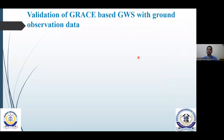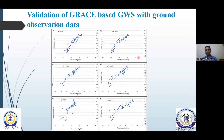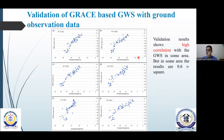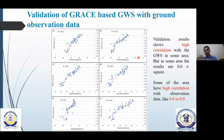Coming toward the validation — validation is an important role whenever we talk about remote sensing data analysis. The GRACE-based GWS was correlated with ground observation data that is seasonally available. The validation results show a very high correlation with the GWS in some areas. In some points we can see an R-squared of 0.6, so there is some variation within the area. But overall, we have a high correlation ranging from 0.8 to 0.9 as well.